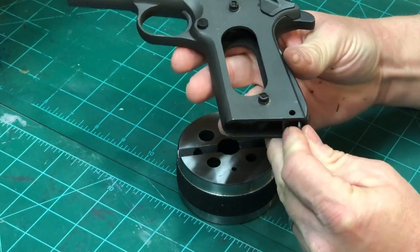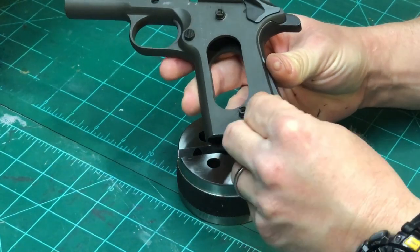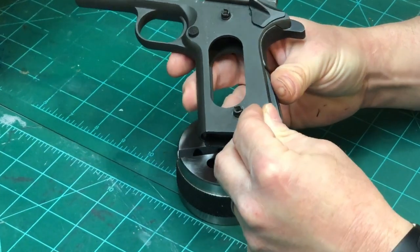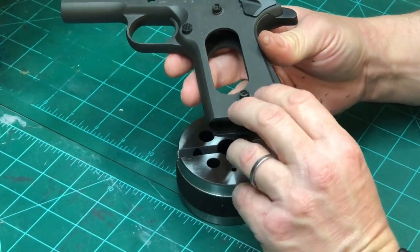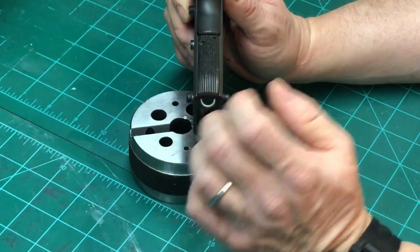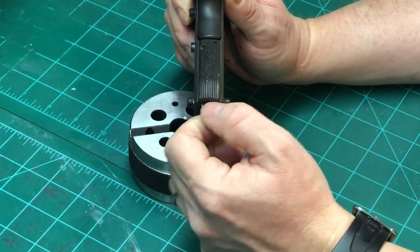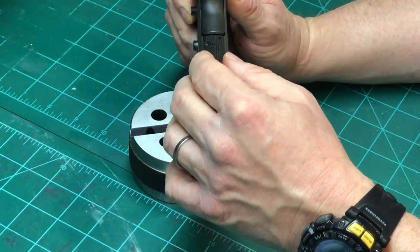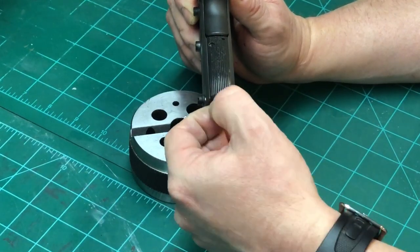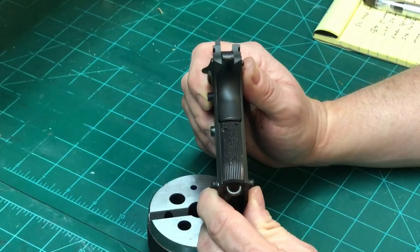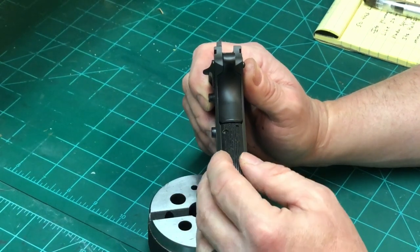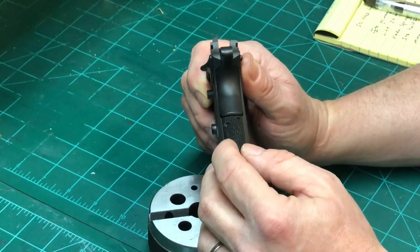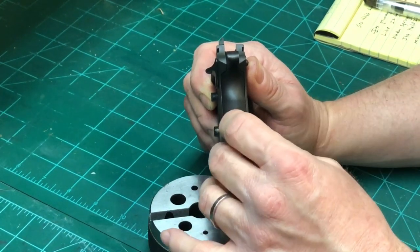Fits into the frame like that and is held in place with a mainspring housing pin for the frame. One thing I found very interesting in studying this part in its relationship to the frame, is that there was actually a fair amount of wiggle room. So there's an opportunity maybe to see if we can take that out.